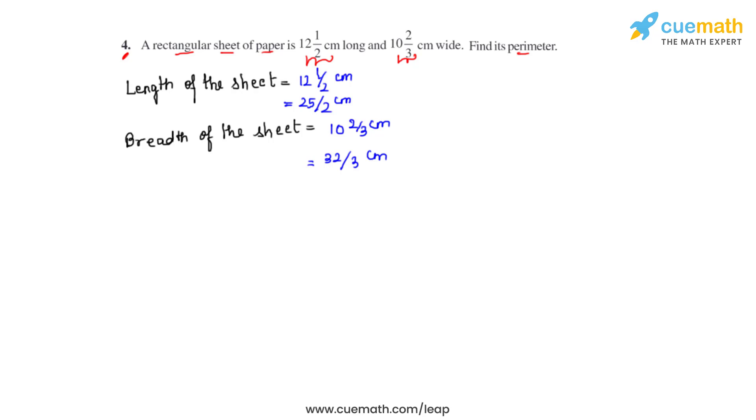So the next part is to find the perimeter of the rectangular sheet. Now we know that the perimeter of a rectangular sheet or a rectangular figure is 2 times l plus b where l represents its length and b represents its breadth or the width. So we'll substitute the values. For length we'll substitute it with 25 over 2 and for width we'll substitute it with 32 over 3.